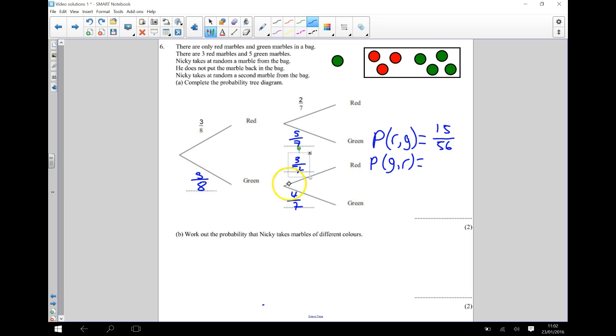Okay, so for green followed by red, I've got 5 eighths times by 3 sevenths. So again, that's going to be 15, and 8 times 7 is 56.